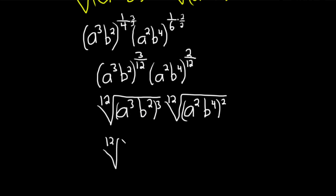So this is going to be 12th root. 3 times 3 is 9. 2 times 3 is 6. And then 12th root. 2 times 2 is 4. And then 4 times 2 is 8.